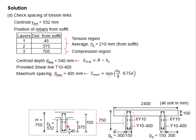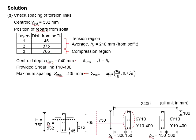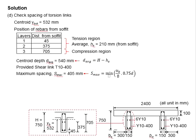Finding the average of the two bar positions and subtracting from 750 mm, you obtain the average centroid depth of 540 mm. This 540 mm is then multiplied by 0.75 to compute the maximum spacing between the torsion links.